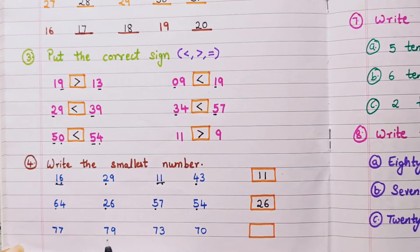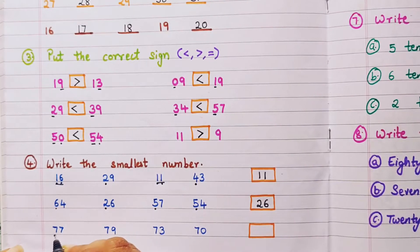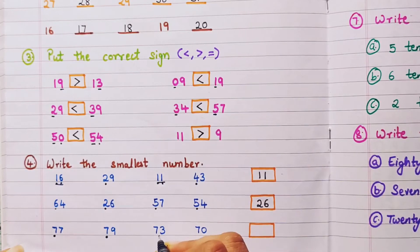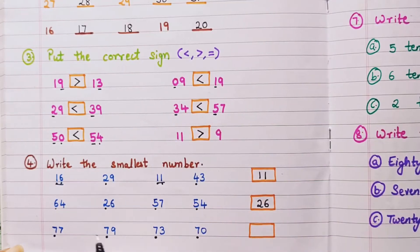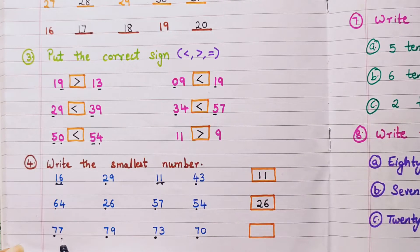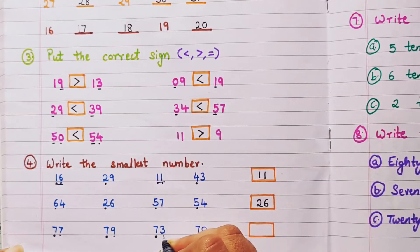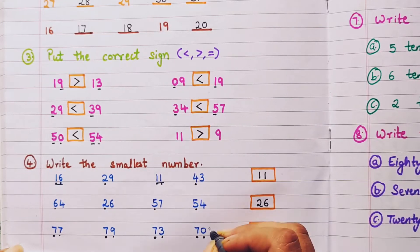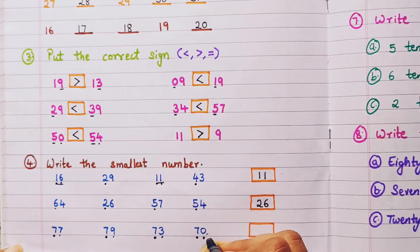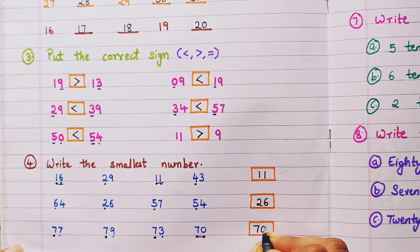Next group: 77, 79, 73, and 70. In the tens place all have 7, so we compare the ones: 7, 9, 3, and 0. The smallest ones digit is 0, so 70 becomes the smallest number.